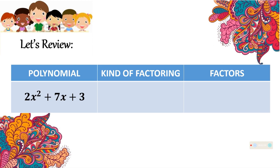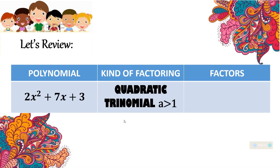For the next example, we have 2x squared plus 7x plus 3. What kind of factoring technique are you going to use here? That is under quadratic trinomial where a is greater than 1. And the factors of this are 2x plus 1 times x plus 3.